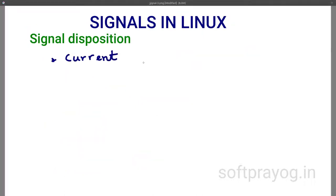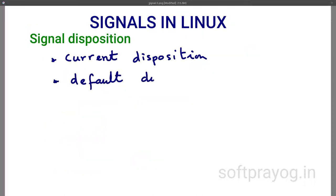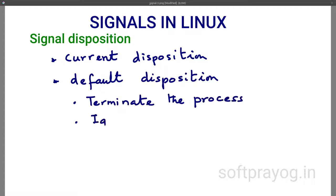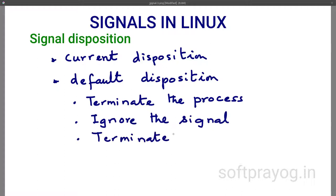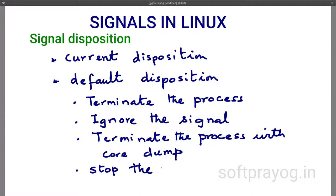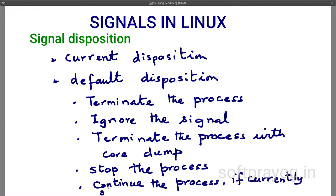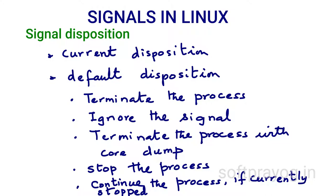Each signal has a current disposition in a process — that is, what happens when a signal is delivered to a process. Each signal has a default disposition which can be changed by the process. The default disposition of a signal is to terminate the process, or ignore the signal, or terminate the process with a core dump, or stop the process, or continue the process if it is currently stopped.